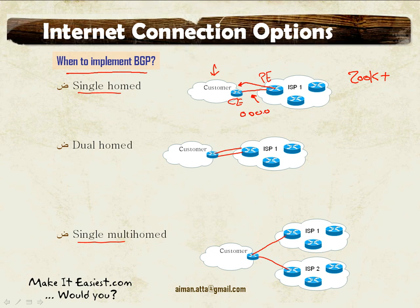Just having a default route pointing toward the ISP will be more than enough when we have only one path to reach any destination. In a dual-homed implementation, I don't think we're going to need BGP — it could be used, but it won't make a huge difference. Starting from a single multi-homed implementation, it would be better to use BGP to exchange routing updates.